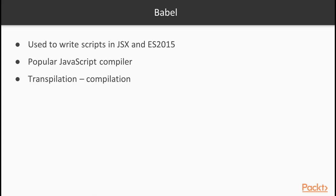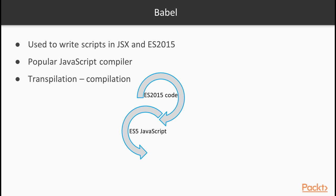In order to use JSX and some features of ES2015 in our code, we have to install Babel. We use Babel to write our scripts in JSX and ES2015, and when we are ready to ship, we compile the sources into ES5, the standard specification implemented in major browsers today. Babel is a popular JavaScript compiler widely adopted within the React community. Babel can compile ES2015 code into ES5 JavaScript, as well as compile JSX into JavaScript functions. The process is called transpilation.